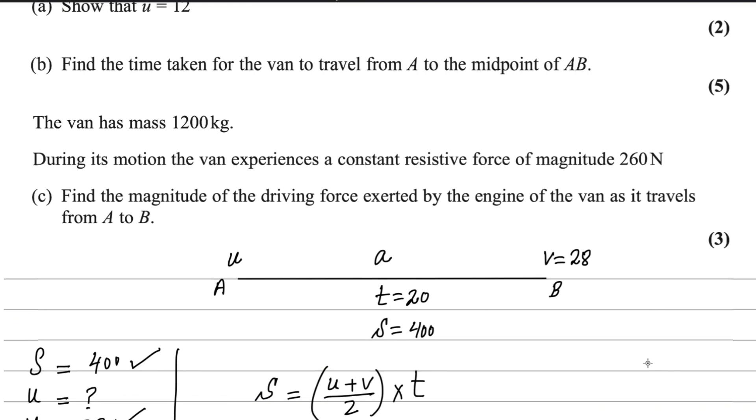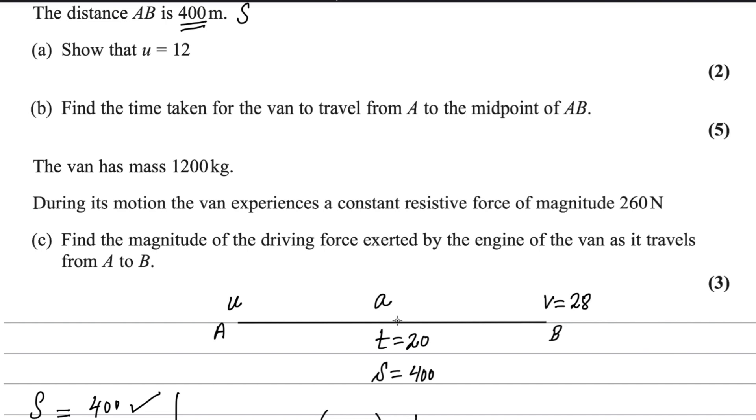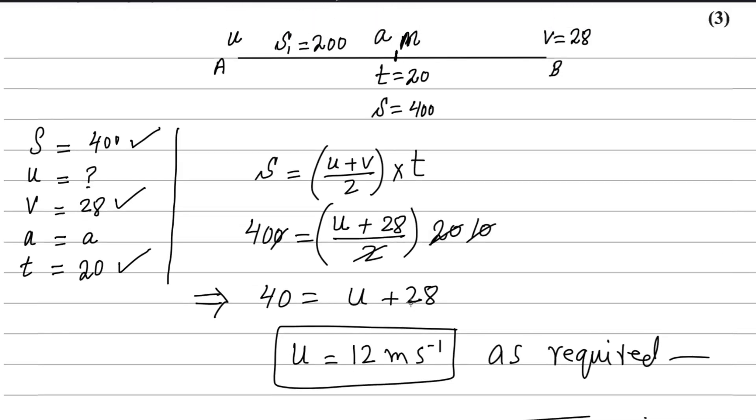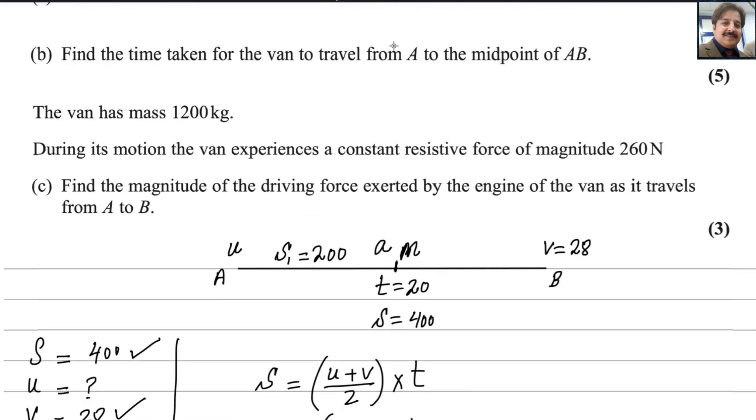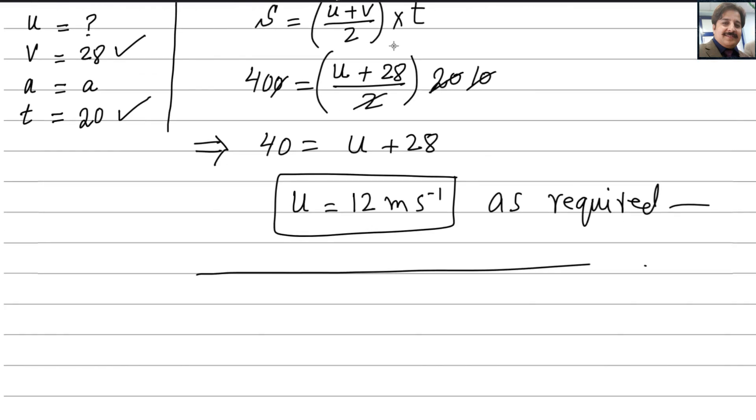Find time taken for the van to travel from A to the midpoint. If you take the midpoint here, the new distance is 200, half of 400. Acceleration remains the same throughout from A to B. Let's say this is the midpoint M. Now write the things that are given here. From A to M, distance is 200, u is already found, that is 12. We don't have v here, and we don't have acceleration.